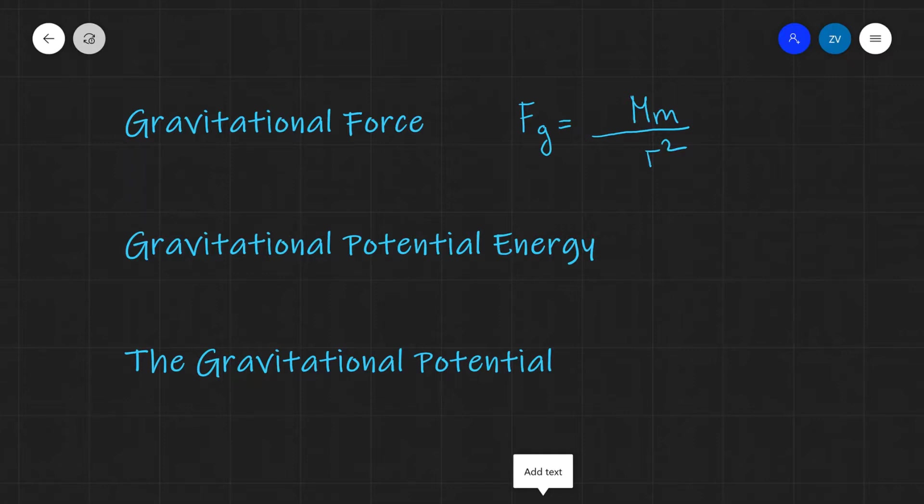The constant of proportionality is G, which is 6.67 times 10 to the power of minus 11, the gravitational constant. Because this force is attractive, we have the convention that we write a minus sign over here.